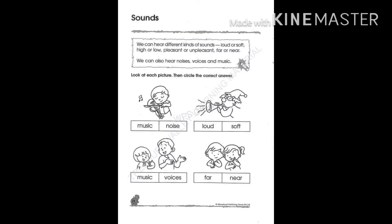Then circle the correct answer. Look at the picture first. Music or noise? The second picture, talking about loud or soft. The next, music or voice. The last picture, far or near. You need to choose one by looking at the picture first.